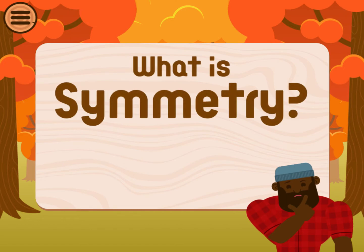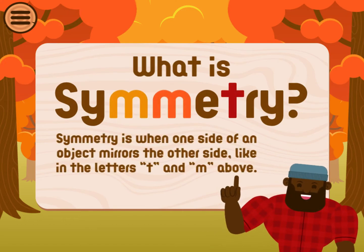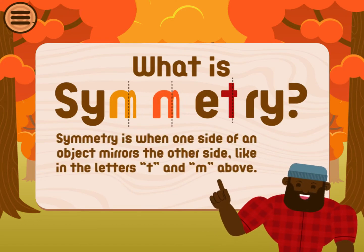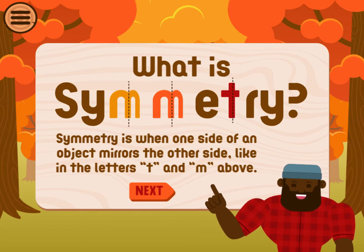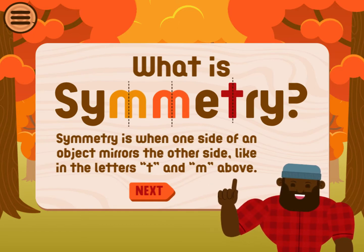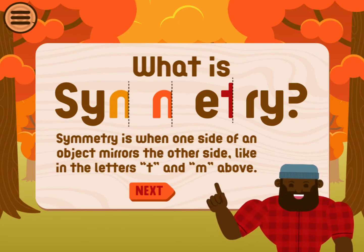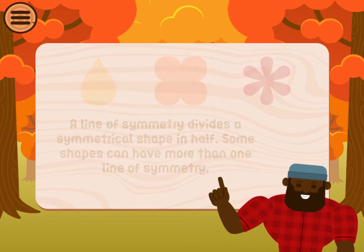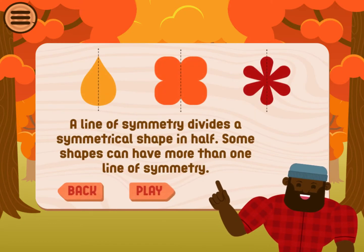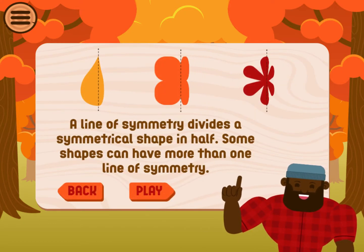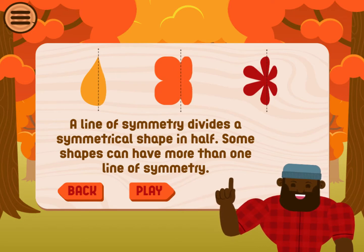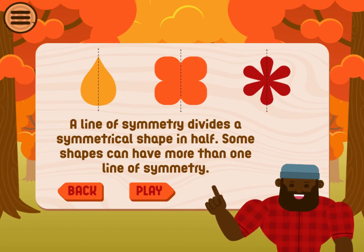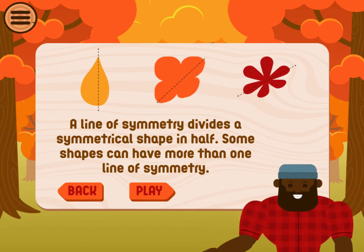What is symmetry? Symmetry is when one side of an object mirrors the other side, like in the letters T and M above. A line of symmetry divides a symmetrical shape in half. Some shapes can have more than one line of symmetry.